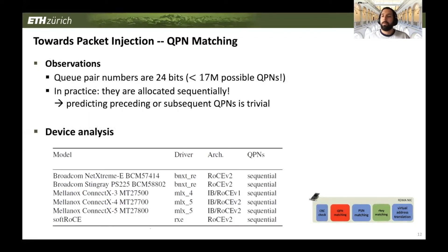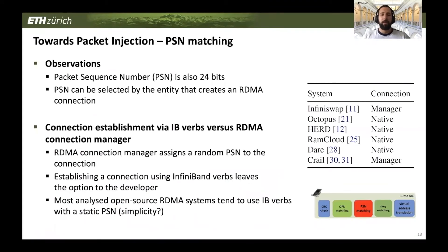In the second step, we bypass QPN matching. Queue Pair numbers are 24 bits — almost 17 million possible values — but in practice they are allocated sequentially, making predicting preceding and subsequent QPNs trivial. We analyzed different devices and implementations like SoftROCE, and all of them used sequential QPNs. Packet Sequence Numbers are also 24 bits and can be selected by the entity creating the RDMA connection, either via InfiniBand verbs or the RDMA Connection Manager. The Connection Manager assigns a random PSN, but using IB verbs this is left to the developer. Most open-source RDMA systems we analyzed use IB verbs, likely out of simplicity.